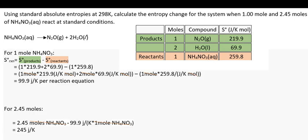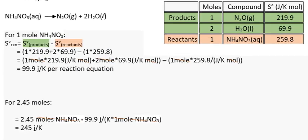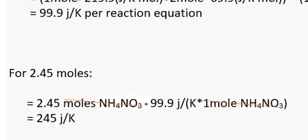So we could use that previous answer effectively as a conversion factor. So if we look at this in terms of dimensional analysis, we start with the 2.45 moles of ammonium nitrate that we're given. And we multiply that by the 99.9 joule per kelvin. And now that's per 1 mole of ammonium nitrate. So the mole units cancel. And you're left with 2.45 joule per kelvin as your answer.